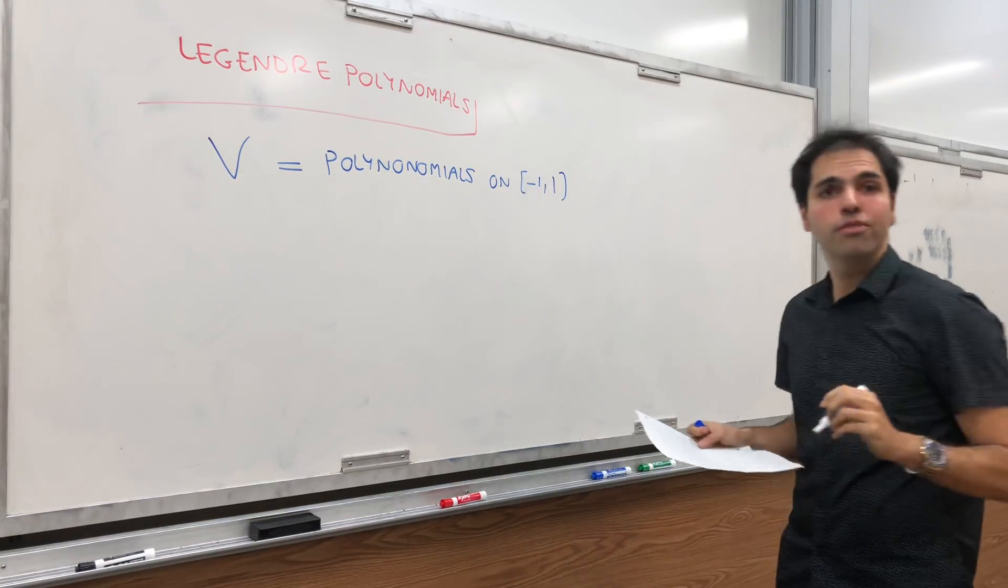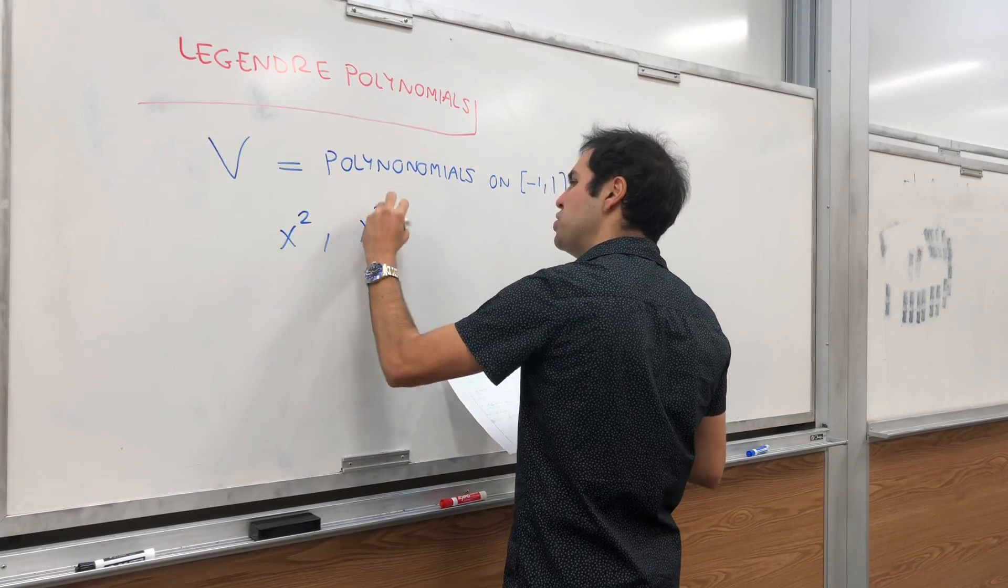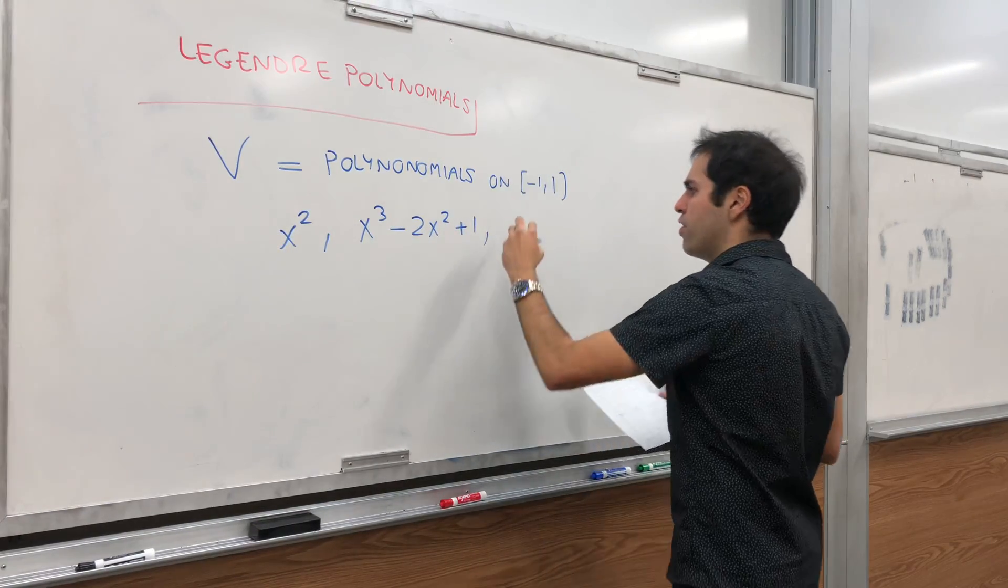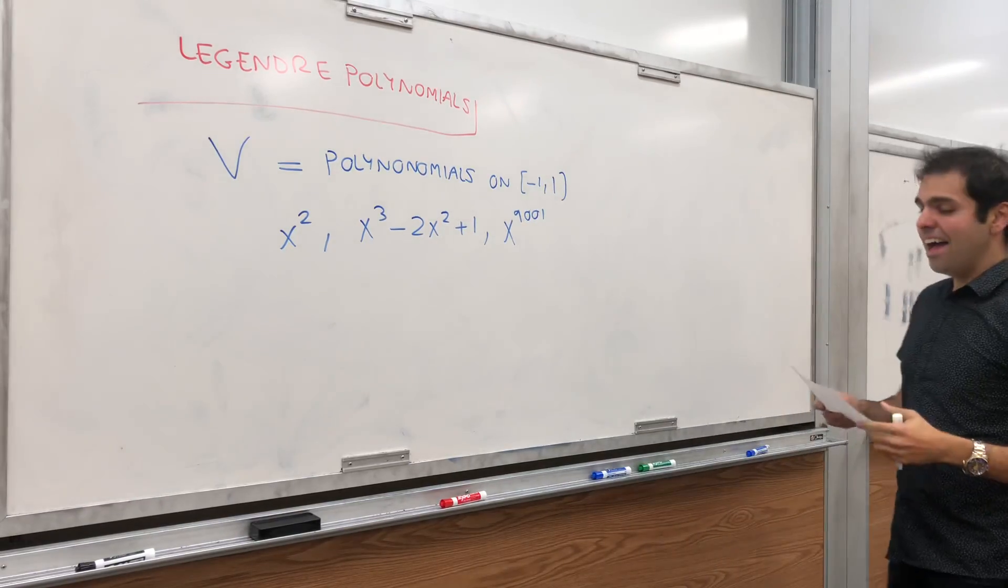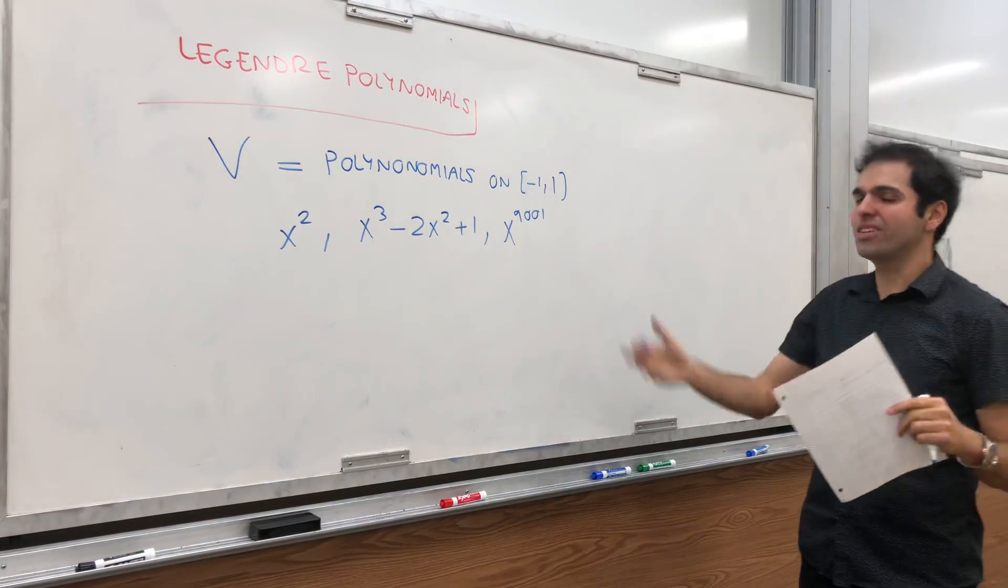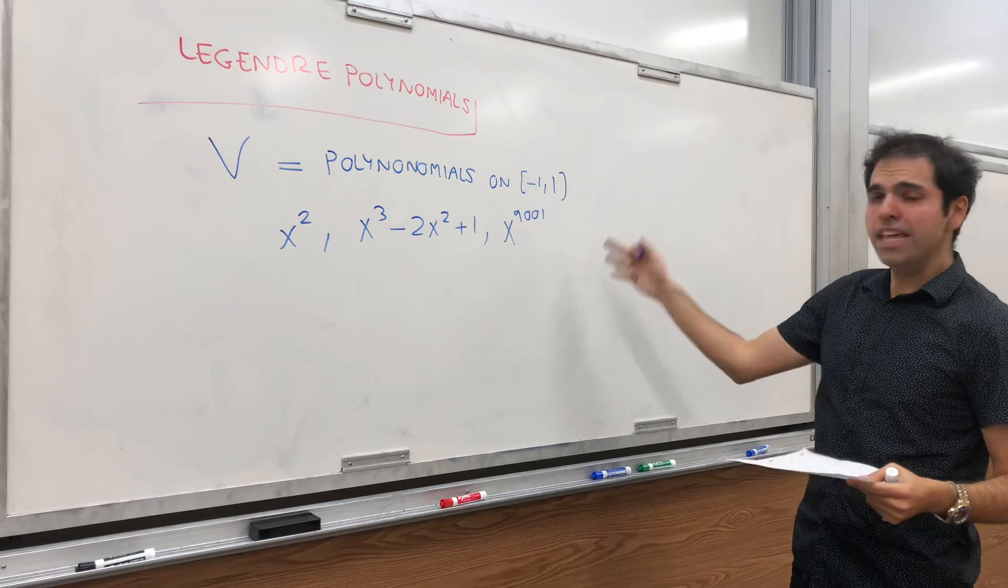For example, x squared is in it, or like x cubed minus 2x squared plus 1, or other things like x to 9,001, whatever. And this is a vector space because you can add polynomials, you can scale or multiply polynomials.